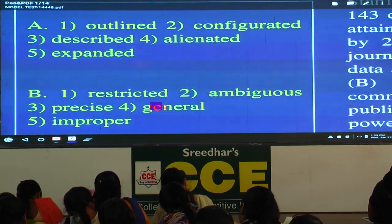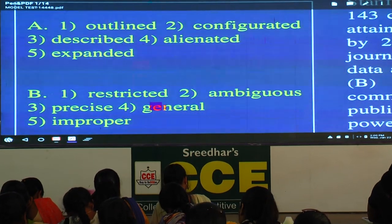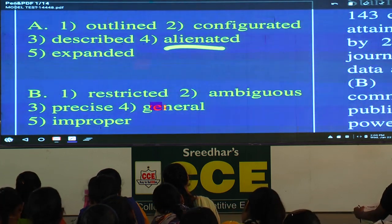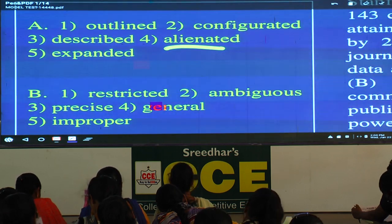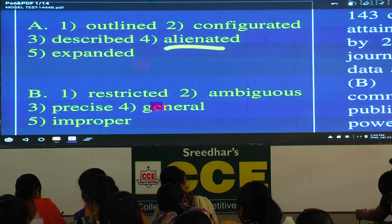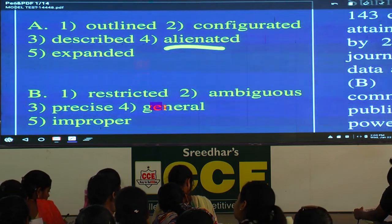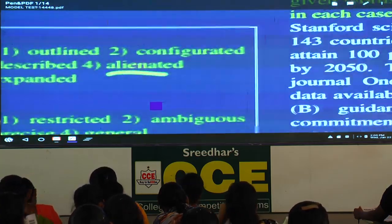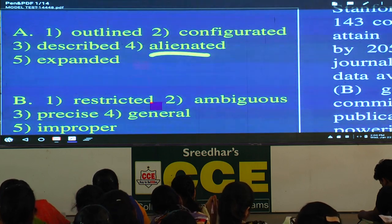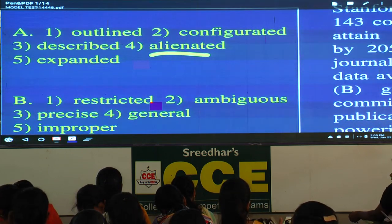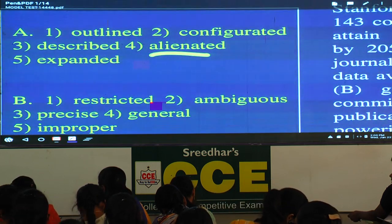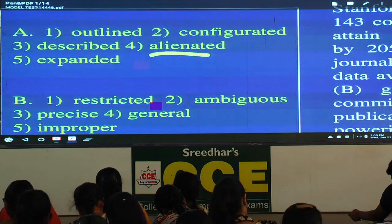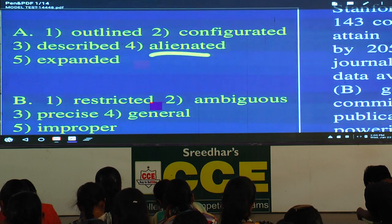Usually instruments, sometimes gadgets, but usually instruments. Next, 'described' — underline the word alienated. Alienated means isolated — write that meaning. It goes with tribal people, minorities who are not part of the mainstream. 'Expanded' — no. The actual sentence is 'Stanford scientists have new steps' — underline 'new steps.' The words used with new policies or new steps are enumerate, outline, highlight. Based on that, the first option 'outlined' is the answer. Configuration is ruled out, described and alienated are ruled out, expanded is ruled out.